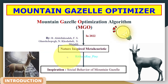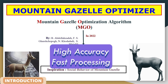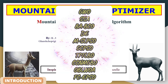We can use this algorithm to solve different global optimization problems because it provides optimal and efficient design solutions and has a good convergence rate and stability compared to other algorithms. It provides a high level of accuracy and faster processing speed than other algorithms.